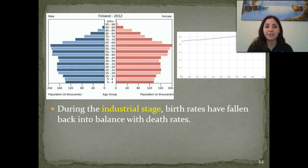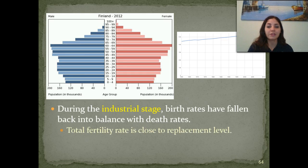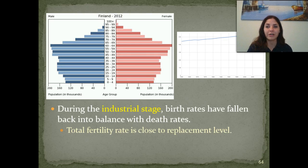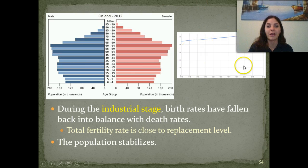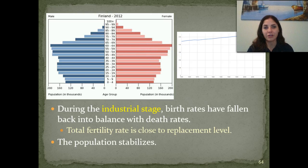During the industrial stage, birth rates have fallen back into balance with the death rates. You'll see more of a bulge in the middle. The total fertility rate is close to the replacement level, so we start leveling off the population, which eventually starts to stabilize. The number of births is a little less than what we have in the middle ages, and people are living well into their 60s and 70s.